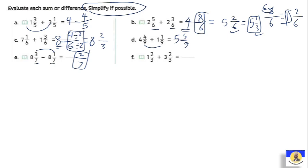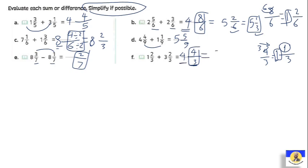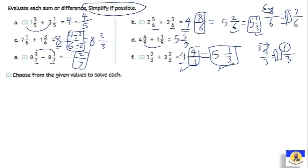Important note: when you have a mixed number, don't let the fraction beside it be improper — meaning the numerator shouldn't be greater than the denominator. So 8/6 is improper. Convert it: 8 ÷ 6 = 1 remainder 2, so 8/6 = 1 and 2/6. Add that 1 to the whole number 4, giving 5 and 2/6. Simplify by dividing by 2: answer is 5 and 1/3.